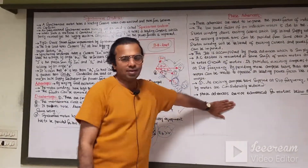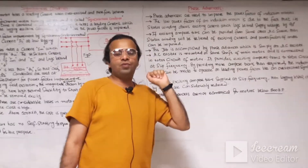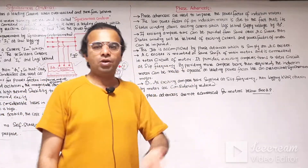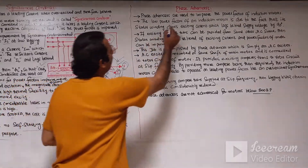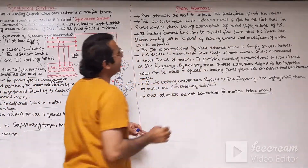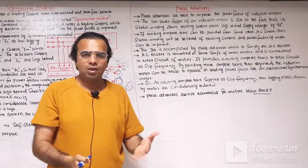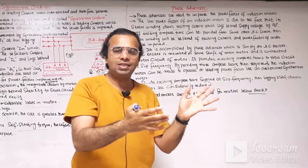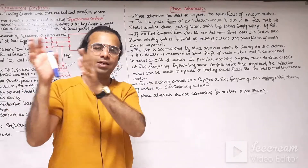The second method is the phase advancer. Phase advancers are used for the power factor improvement of the three-phase induction motor. The three-phase induction motor has two types of rotors: squirrel cage or wound rotor. Phase advancers are used to improve the power factor of induction motors. The low power factor of the induction motor is due to the fact that the stator winding draws an exciting current which lags behind the voltage at an angle of 90 degrees. The stator of the three-phase induction motor is energized from the main three-phase supply, producing a three-phase revolving magnetic field that runs at synchronous speed.